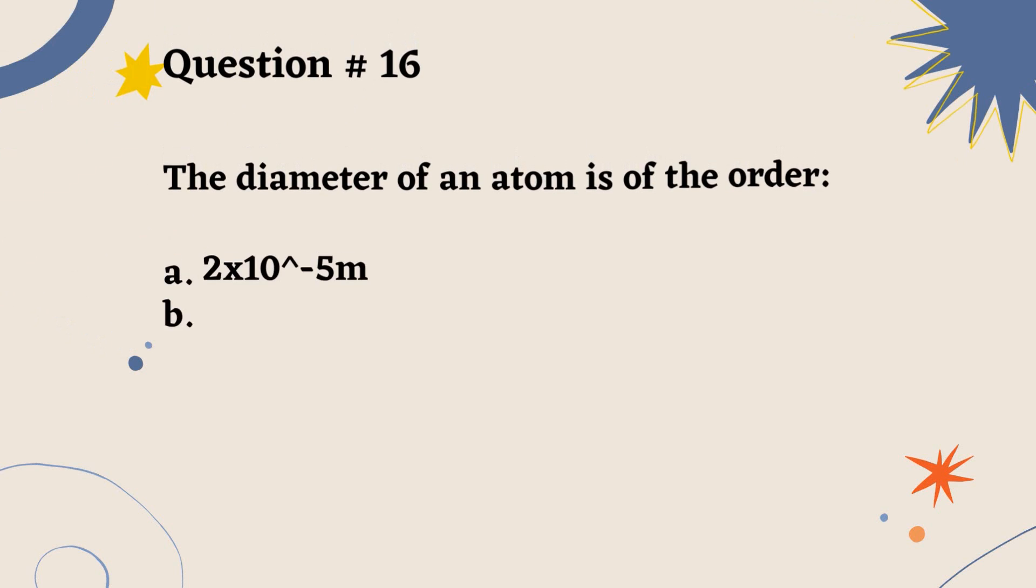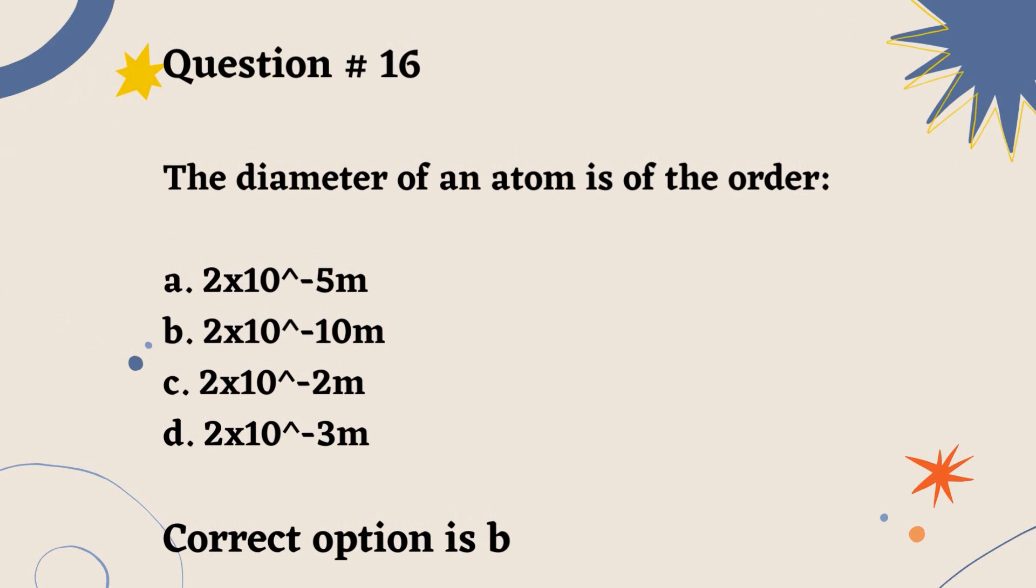Question number 16. The diameter of an atom is of the order: A. 2 into 10 to the power of minus 5 M. B. 2 into 10 to the power of minus 10 M. C. 2 into 10 to the power of minus 2 M. D. 2 into 10 to the power of minus 3 M. Correct option is B.